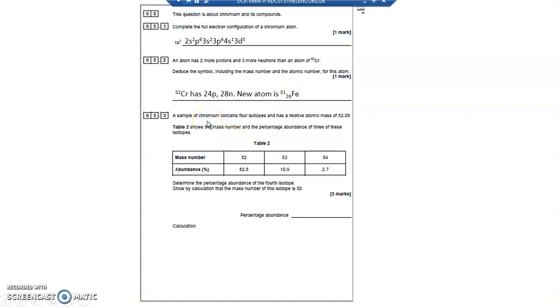The sample of chromium contains four isotopes and has a relative atomic mass of 52.09. The reason it's an odd number is because it's an average of all of the isotopes. So now, it shows the mass number and percentage abundance, that means how common it is, of three of these isotopes. We've got an isotope mass number 52, 53 and 54. Determine the percentage abundance of the fourth isotope. So there's a fourth isotope that I don't know anything about.